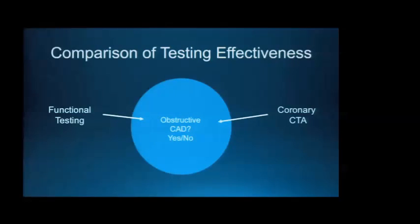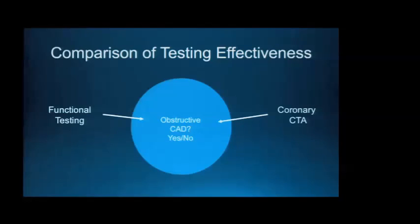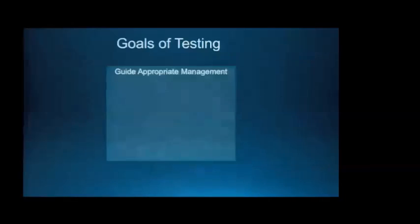The difficulty in comparing functional versus anatomic approaches is that most studies compare their ability to answer a simple binary question: does the patient have obstructive coronary disease, yes or no? I would argue that is not how we should approach the comparative effectiveness question, because that looks at only a limited amount of information from these tests. Instead, we need to consider the ultimate goals of our testing.